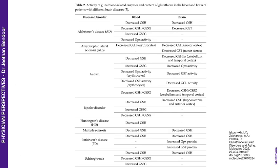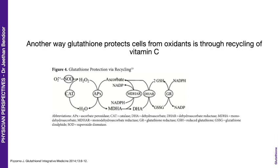One sees a drop in glutathione-related enzymes and the content of reduced glutathione in blood and disease tissue. Central nervous system conditions like Alzheimer's, autism, bipolar disorder and multiple sclerosis show reduced levels of glutathione in both blood and tissue. Glutathione also protects cells from oxidants through recycling of micronutrients such as vitamins C and E — for example, glutathione helps in the recycling of ascorbate or vitamin C.